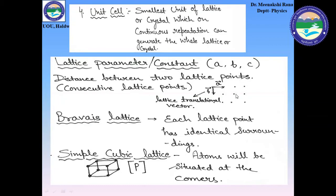Now we will discuss about the Bravais lattice. Bravais lattices are those lattices in which each lattice point has identical surroundings — meaning each lattice point has the same type of surroundings. If we choose any point, each has the same surrounding. This type of lattice is known as a Bravais lattice.